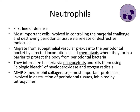All of those bacteria we talked about in the third video, like P. gingivalis and other pathogenic bacteria, are the attackers. Neutrophils are the primary defenders. They migrate from blood vessels underneath the gingiva into the periodontal pocket by directed locomotion known as chemotaxis, forming a barrier to protect the body from periodontal pathogenic bacteria. They internalize the bacteria via phagocytosis — they eat them — and kill them using a biologic bleach: myeloperoxidase and oxygen radicals, a nasty mix of chemicals that bacteria cannot survive.